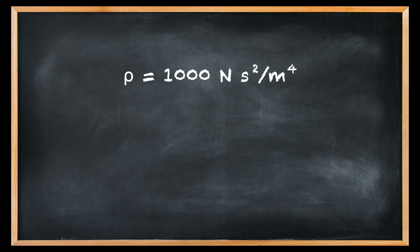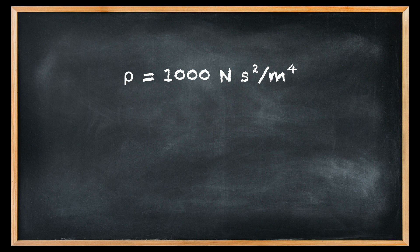Since ρ equals one thousand Newton second squared per meter to the fourth power, equation seven can be expressed as follows.